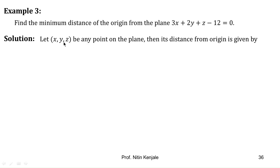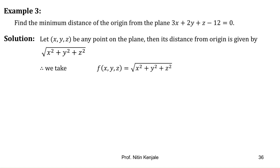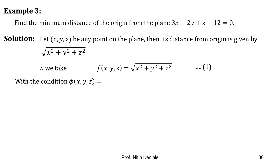Consider a point on the plane 3x + 2y + z - 12 = 0. Its distance from the origin is given by √(x² + y² + z²) — this is the distance formula. So the function to minimize is f(x, y, z) = √(x² + y² + z²), which we label as equation (1). Since the point lies on the plane, the constraint is φ(x, y, z) = 3x + 2y + z - 12, labeled as equation (2).